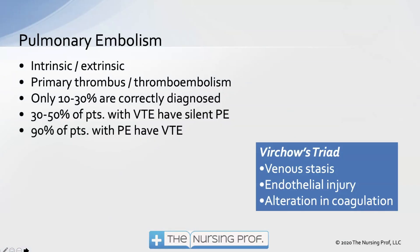Pulmonary embolism can come from one of a couple different ways — it can be intrinsic or extrinsic. Intrinsic means it's forming within the body; extrinsic means it's coming from outside. If it's caused by fat molecules lumping together we call it a fat embolism; if air is introduced from outside we call it an air embolism. Typically when we say pulmonary embolism we're talking about a blood clot, but pulmonary embolism is a broad term that can incorporate all of these components.